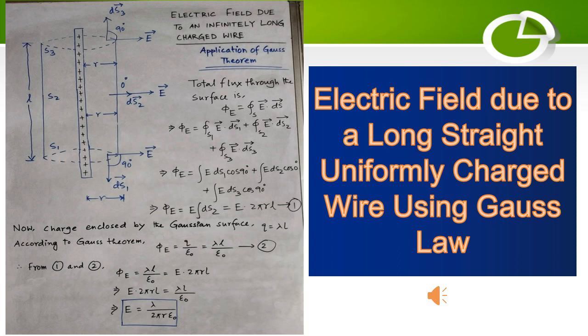According to Gauss's theorem, we know that total flux is q by epsilon_0. So in place of flux we have q by epsilon_0. Again, flux we got as E times 2πrl, so E times 2πrl equals q by epsilon_0.